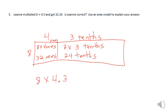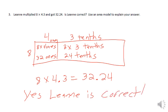So I know eight times four and three tenths is equal to 32 and 24. So I know eight times four. Yes, Leon is correct. Yes, Leon is correct.